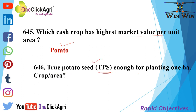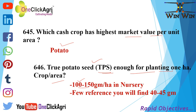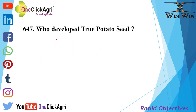True Potato Seeds (TPS): 100 to 150 grams per hectare in nursery is enough for planting 1 hectare area; some references mention 40 to 45 grams. Who developed true potato seeds? That is Ramanjun.